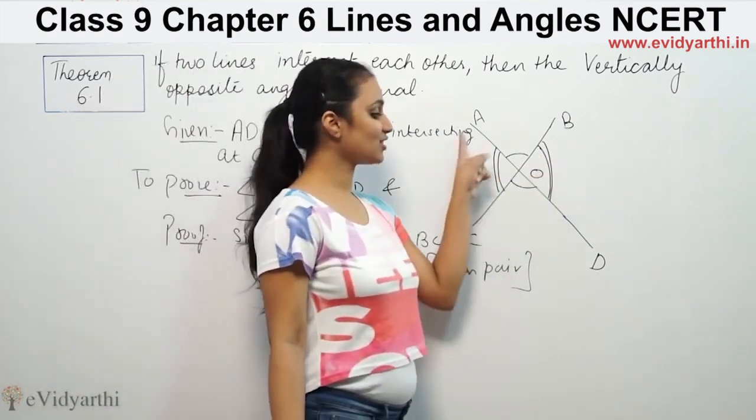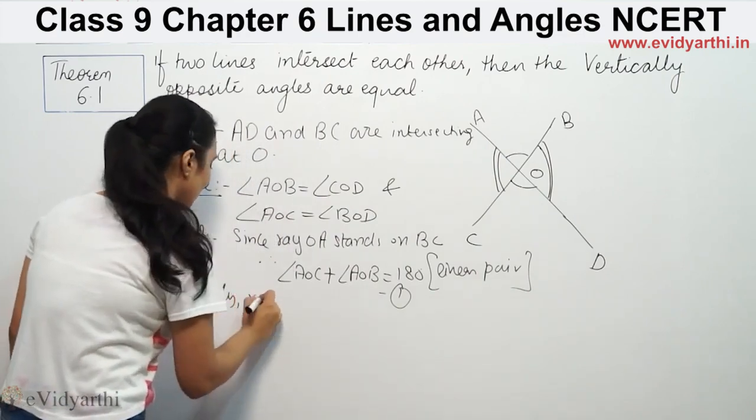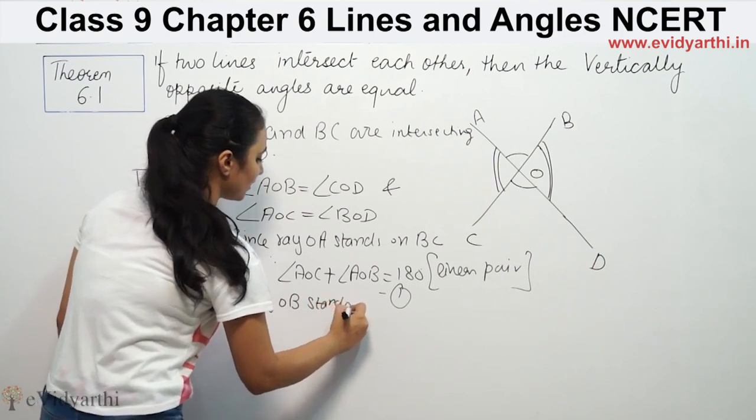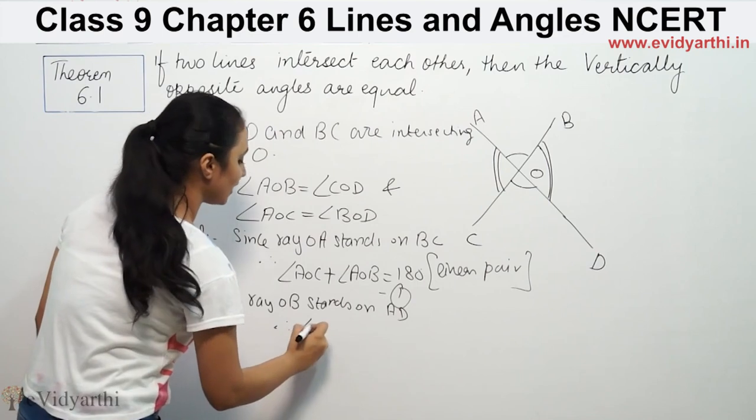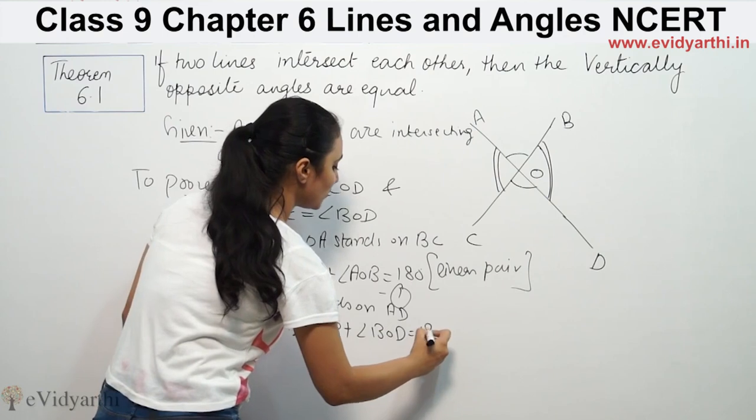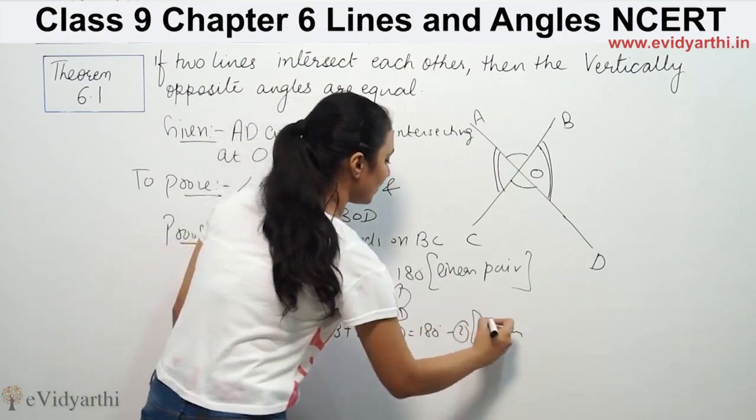Similarly, OB stands on AD. Therefore, angle AOB plus angle BOD is equal to 180 degrees. This is also linear pair.